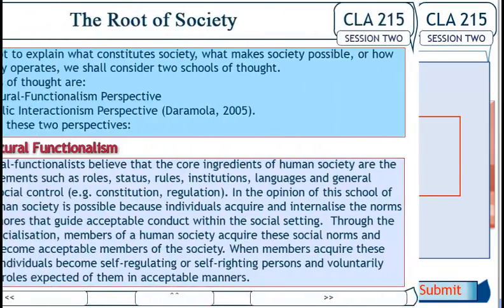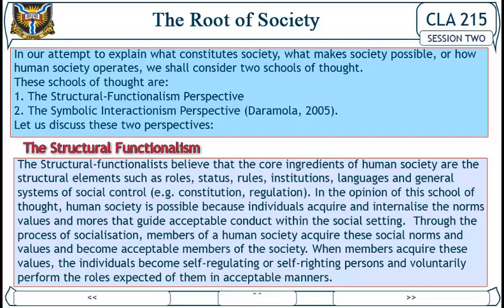The roots of society: we now attempt to explain what constitutes society — what makes society possible, or how human society operates. We shall consider two schools of thought: one, the structural functionalism perspective, and two, the symbolic interactionism perspective.